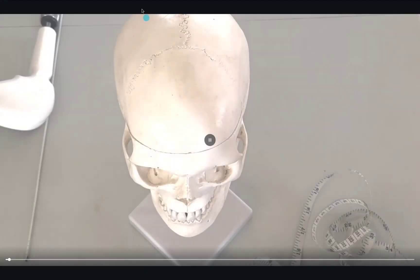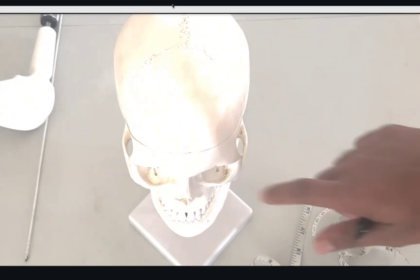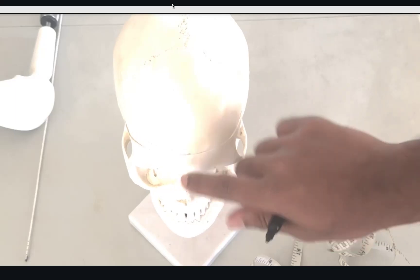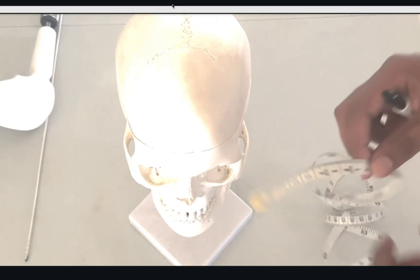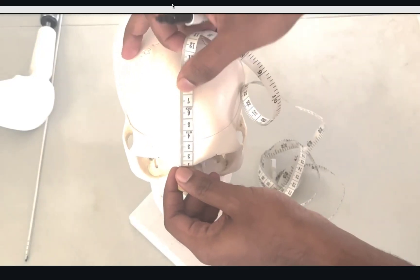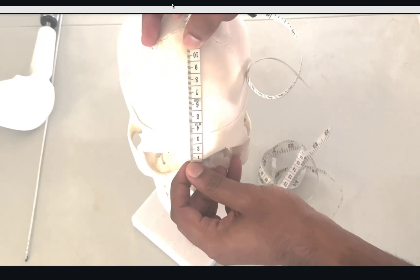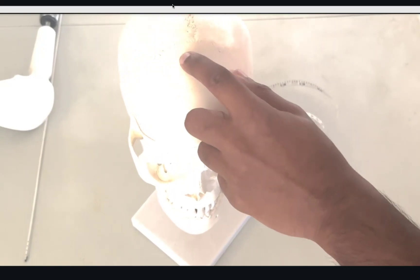We'll walk through the landmarks of the skull and where to insert the EVD. We start off by identifying the most prominent point, the nasion, and we're going to travel 11 centimeters back. Of course, you'll use a sterile marker in reality to mark out the 11 centimeters.